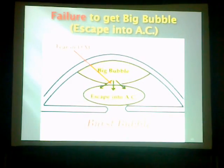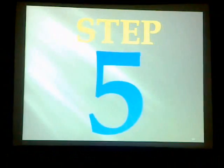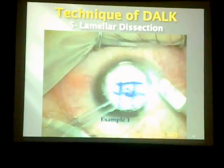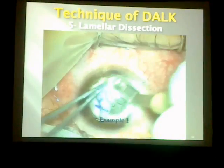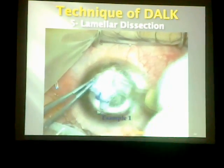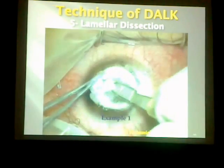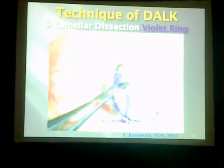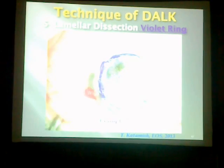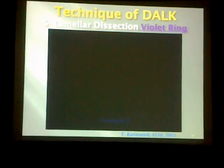This is the mechanism of how the big bubble bursts into the anterior chamber. Step number five is lamellar dissection — an easy step. You make a lamellar dissection to debulk the cornea, preparing for the next step to open the roof of the big bubble. Sometimes, when air makes everything white, I make a violet staining of the edge of the cornea to help with dissection.